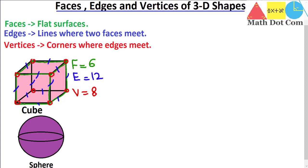Let's look at another shape — the sphere. A sphere has basically only one face. This curved surface is the only face of the sphere. There are no edges in the sphere — no straight lines — it's a curved surface. It has only one curved face and no flat faces. There are also no corners, so vertices are also zero.